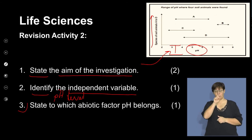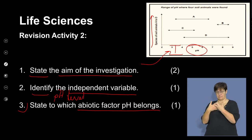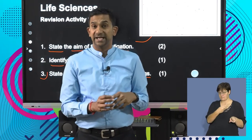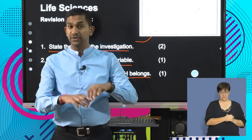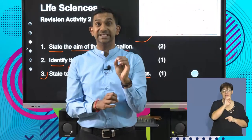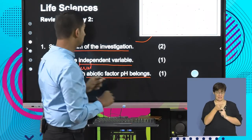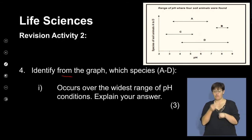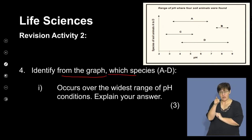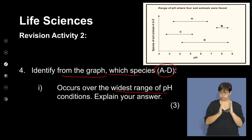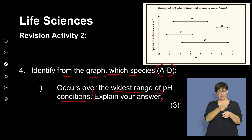State to which abiotic factor pH belongs. In this experiment, pH refers to the quality of soil. If we group the various factors that influence soil, we refer to those as edaphic factors. The next question asks us to identify from the graph which species (A to D) occurs over the widest range of pH conditions, and to explain the answer for three marks. This question has two parts: identify from the graph, and provide an explanation.